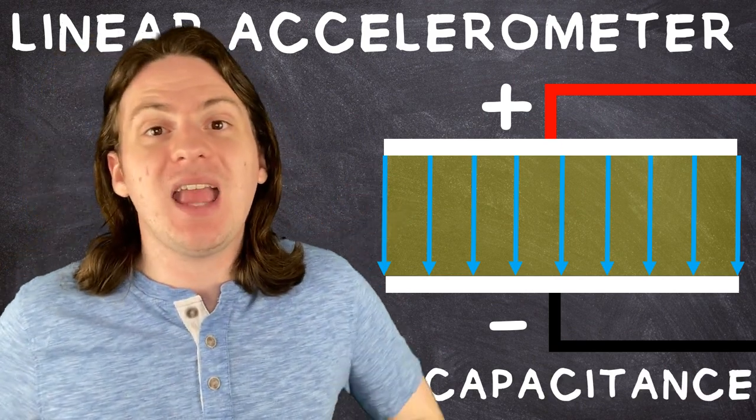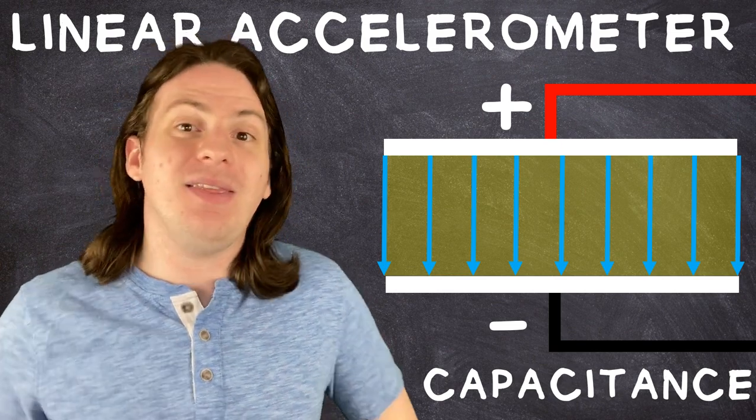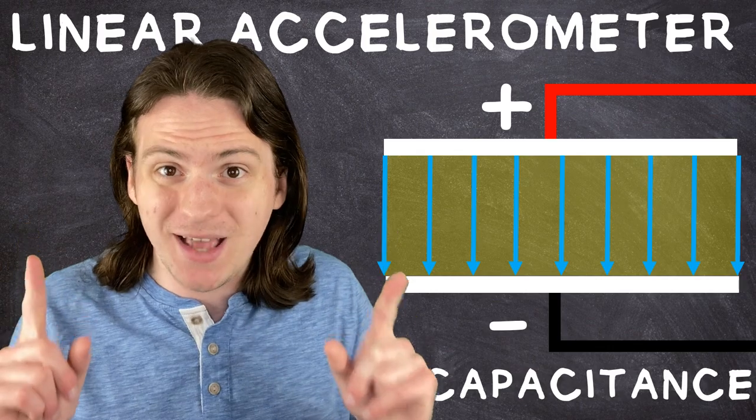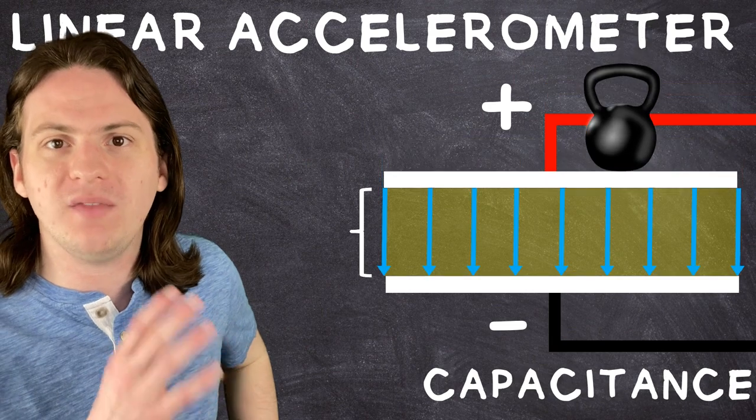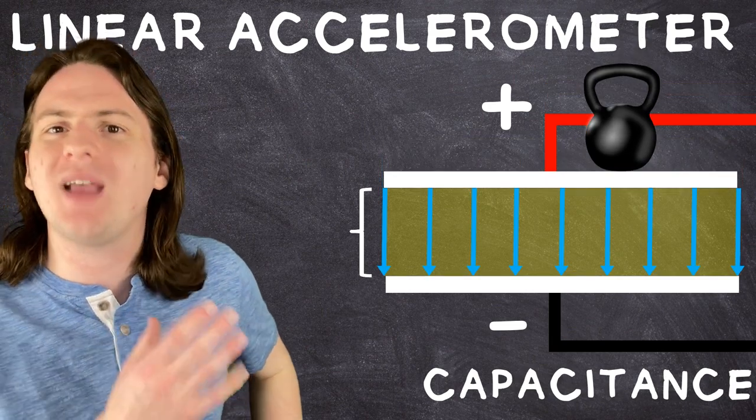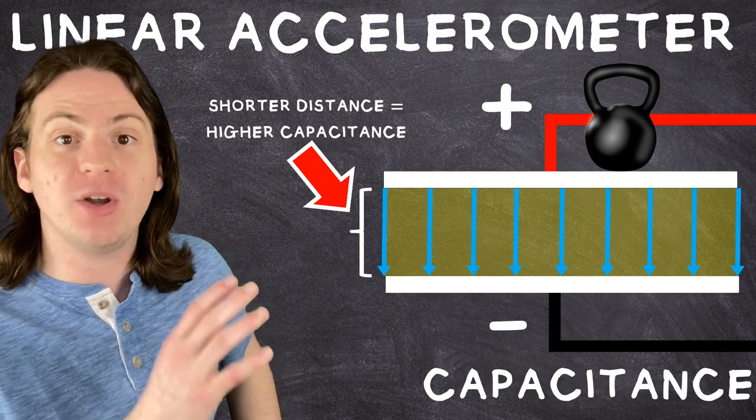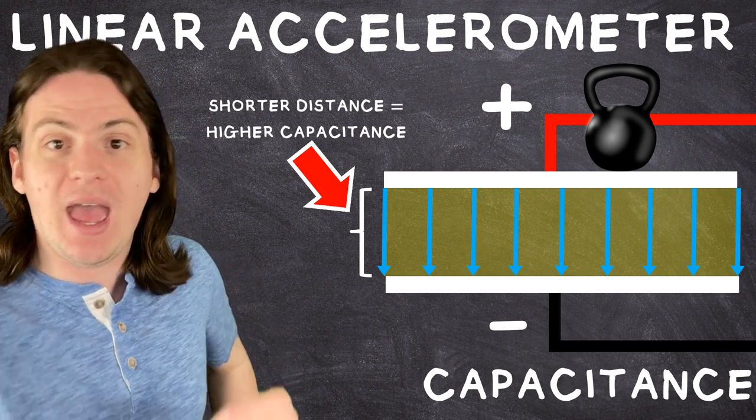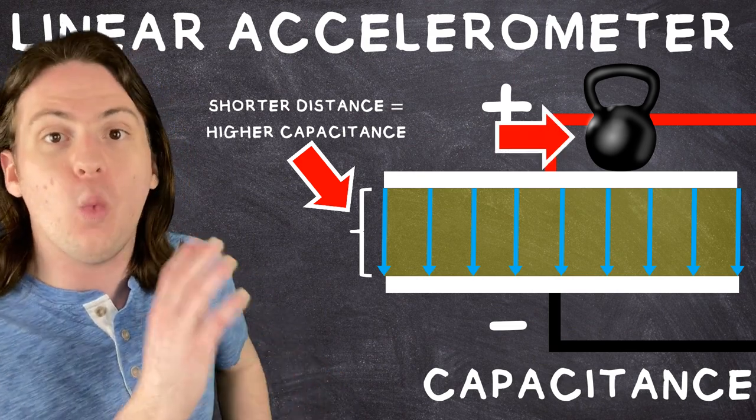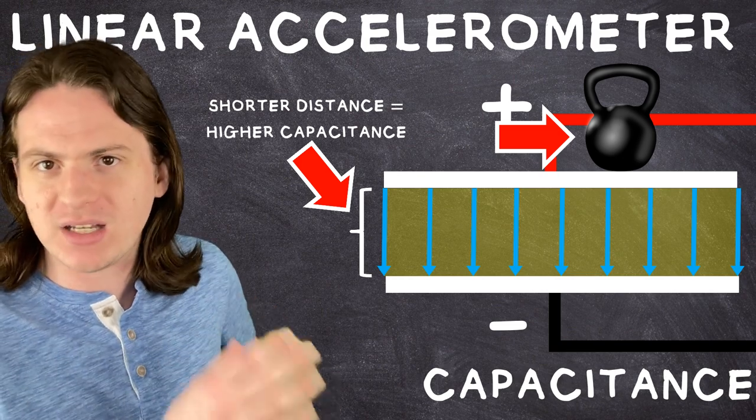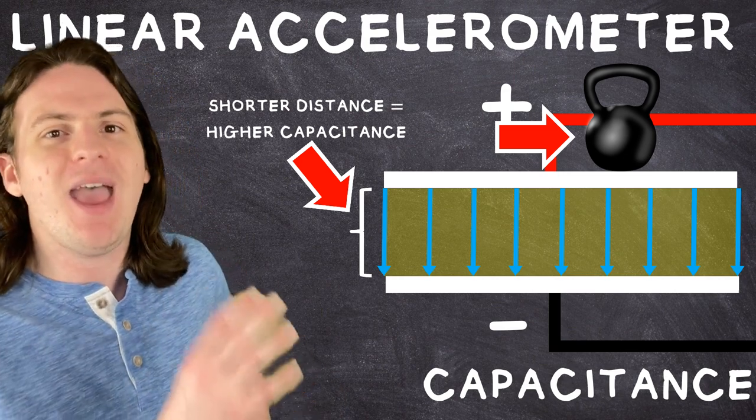Now, the capacitance can change depending on a lot of things, the voltage you're running through it, the size of the plates, or, the most important for us, the distance between the plates. Say we placed a weight on one of these plates, causing it to compress down a bit. This would change the capacitance. And if we could measure how much the capacitance changes, and do a whole bunch of math, then we can figure out how much the thing weighs. The weight of something is just the force of gravity acting upon it. Force is related to acceleration, hence the name accelerometer.